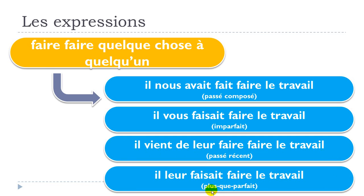The last one is the plus-que-parfait form for the third person plural, and here it's the feminine — though 'leur' is exactly the same for masculine and feminine: il leur avait fait faire le travail. One more time: il nous avait fait faire le travail — and maybe I should put the liaison here.